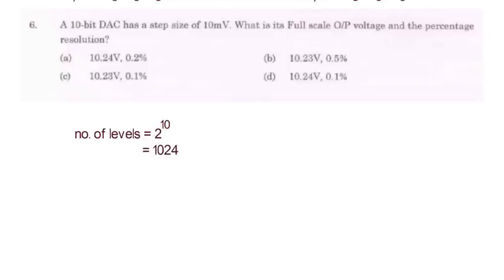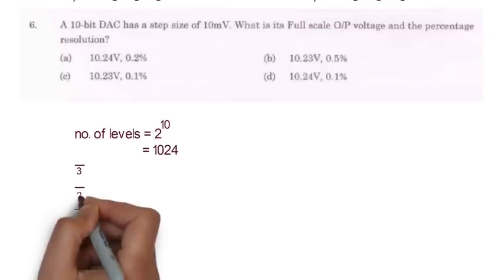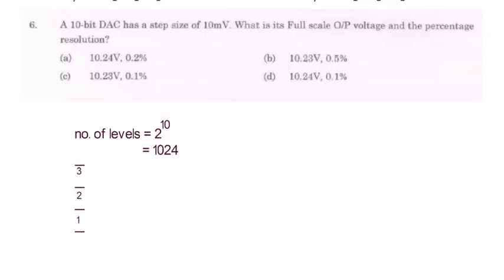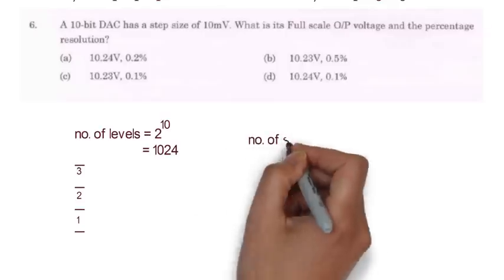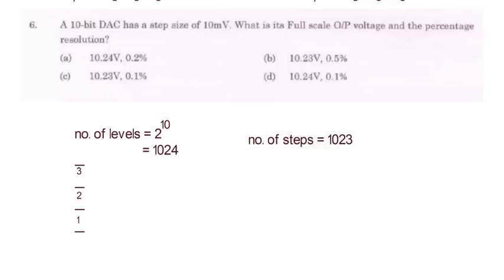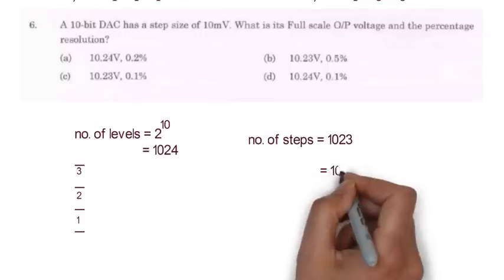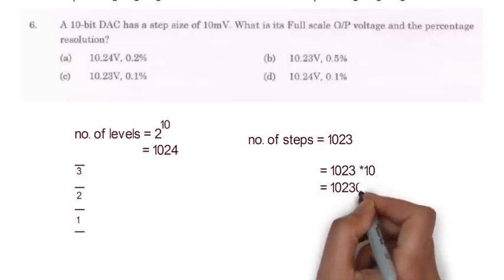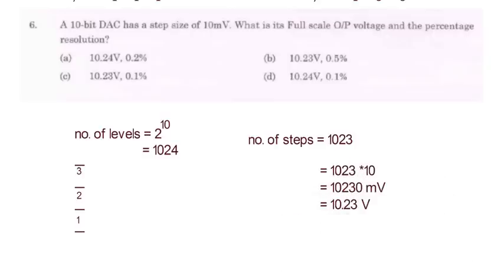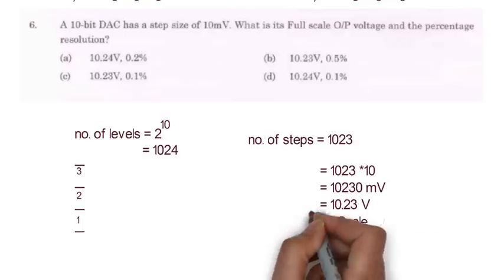Since input has 10 bits so number of levels will be 2 to the power 10 equal to 1024 levels. Since number of steps are always 1 less than the number of levels like if you have 4 levels then number of steps will be 3. So here number of steps will be 1023. Now it is given one step size is of 10mV so 1023 steps will be 10230mV equal to 10.23V. So full scale output will be 10.23V here.